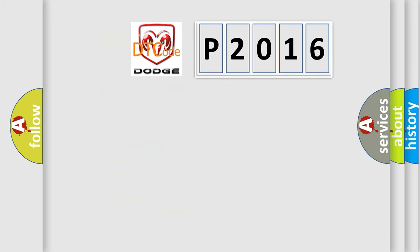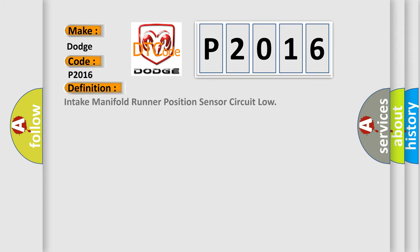What does the diagnostic trouble code P2016 interpret specifically for Dodge car manufacturers? The basic definition is: Intake Manifold Runner Position Sensor Circuit Low. Here is a short description of this DTC code.